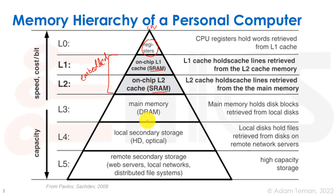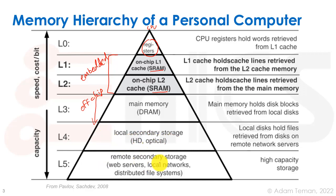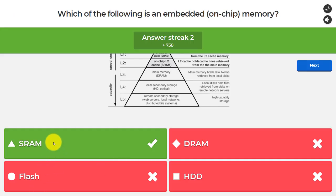To make DRAM, we need a special fab for deep trench or stack capacitors, so it can't be made in the same process as logic. DRAM is provided as an external chip on a DIMM (dual inline memory module) — off-chip. Secondary storage such as hard disks and flash are also separate chips made in different fabrication processes and are not embedded memories.